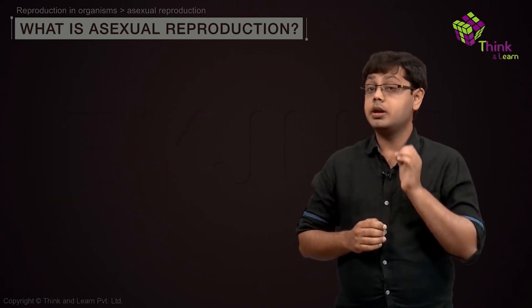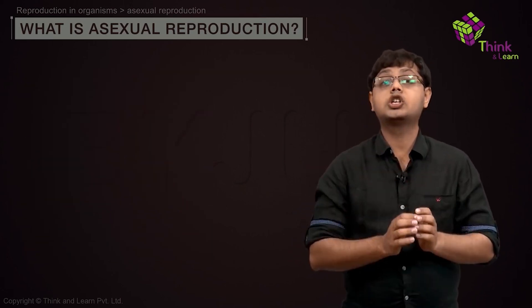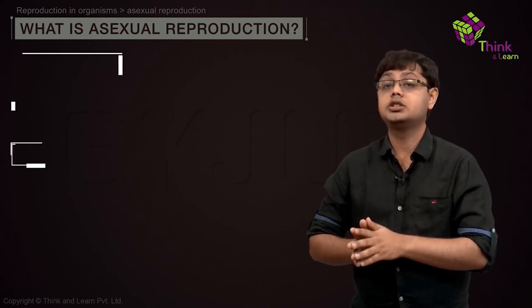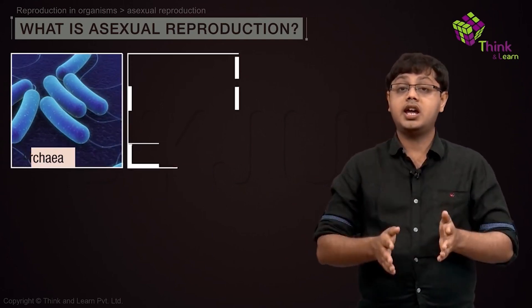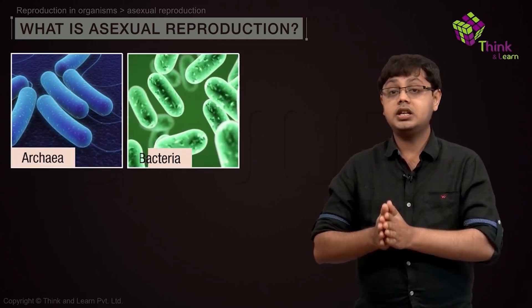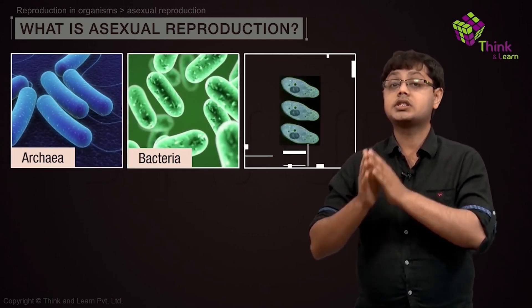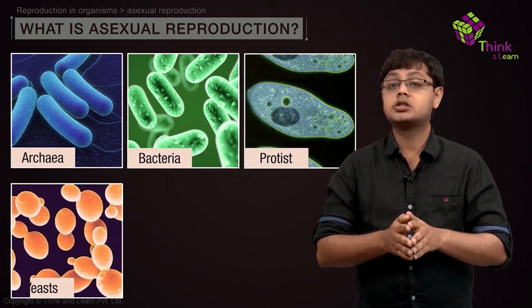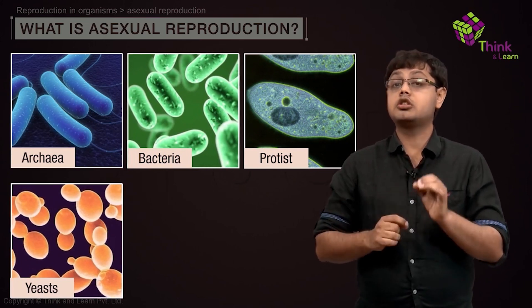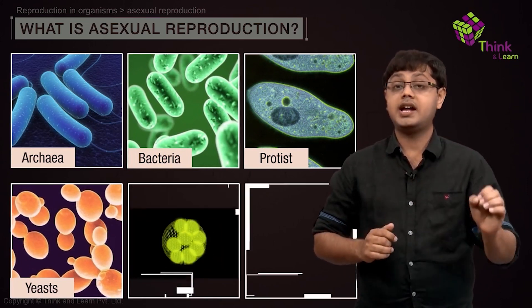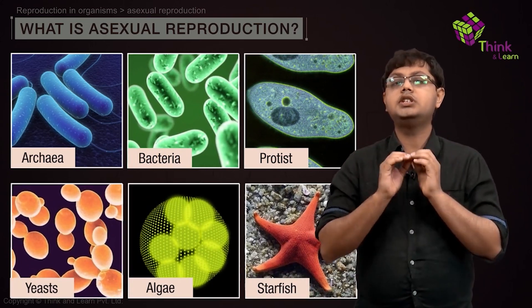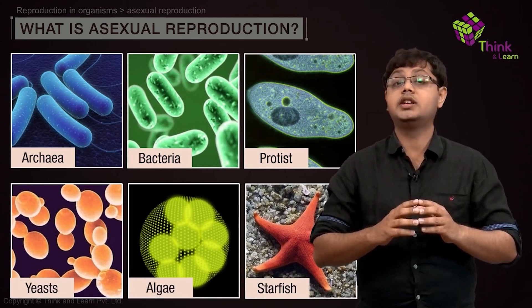Asexual reproduction is common among single-celled organisms like archaea, bacteria, protists, and unicellular yeasts. It is also seen in plants and animals with relatively simple organization.